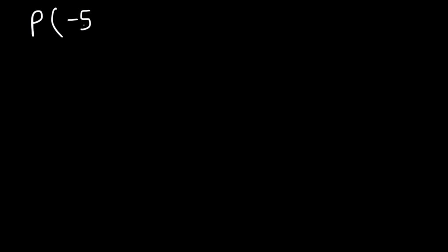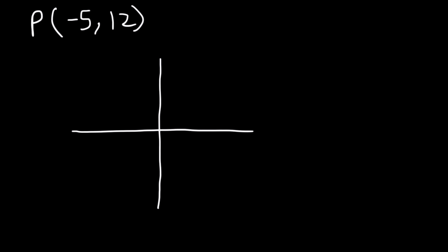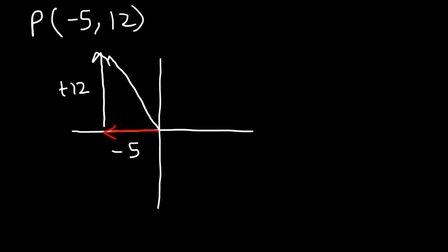Now let's say we're given the point P, which is negative 5 comma 12, and it's on the terminal side of theta. Using this, find the values of the six trigonometric functions. So if you're given a point, what you want to do is plot the point and make a triangle at the same time. X is negative 5, so we travel 5 units to the left. Y is positive, so we travel up 12 units. Then draw the hypotenuse, which is r. So we know this is the 5-12-13 triangle. And here is the angle theta — that's the reference angle. The actual angle is relative to the positive x-axis.